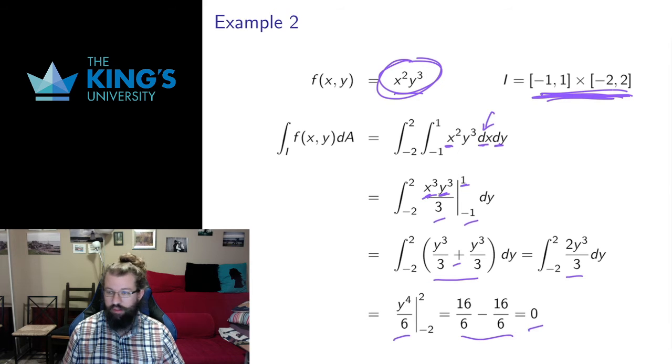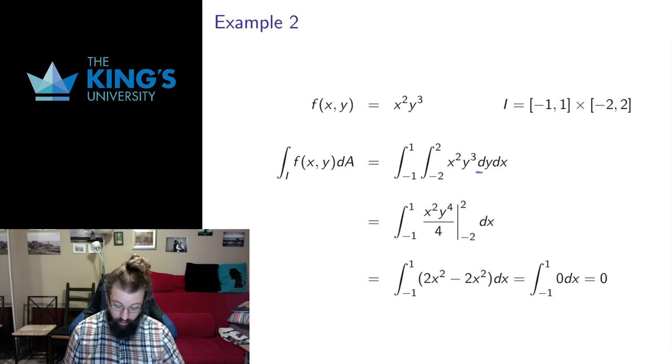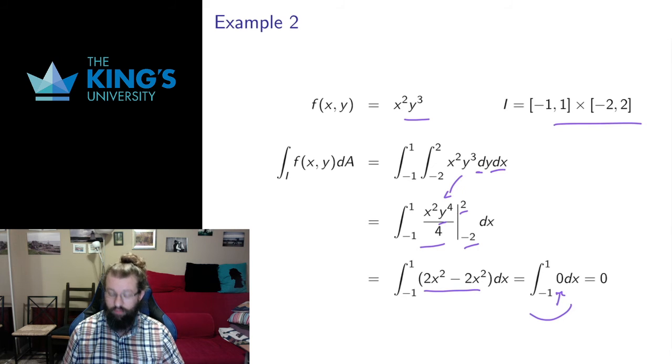This 0 tells us that this graph over this interval actually has equal volume above and below the xy plane. Like with a single variable integral, area above is positive, area below is negative. Here volume above is positive, volume below is negative. This 0 tells us that the volume above the plane and the volume below the plane cancel each other out. I'm going to switch the order here just to show you that I do get 0 whichever order I do. Now I integrate the y first. I evaluate on the bounds of y and that's going to give me 2x squared minus 2x squared, already I'm going to get a 0. If I integrate 0 on any interval, I just get 0. So I do get 0 in either order, as Fubini's theorem tells me I should.